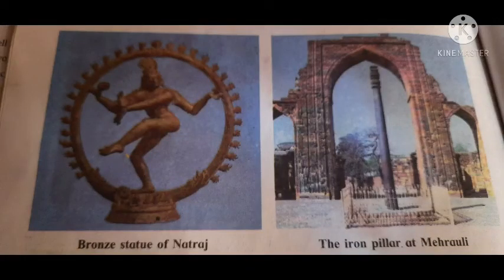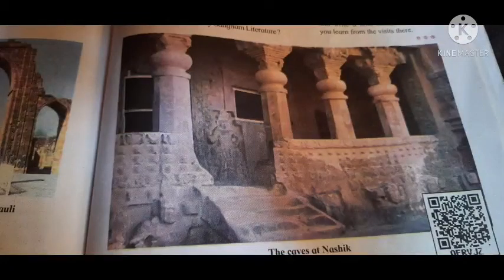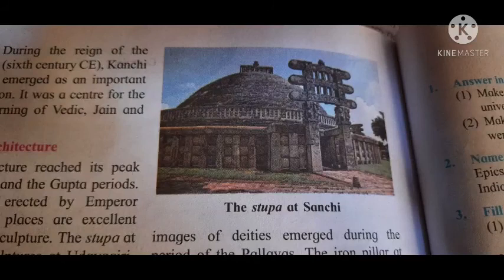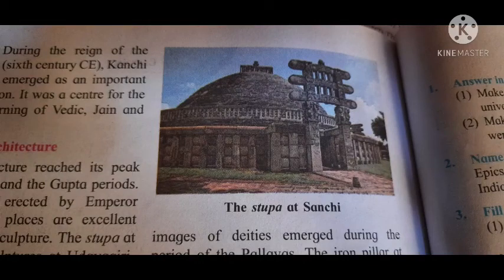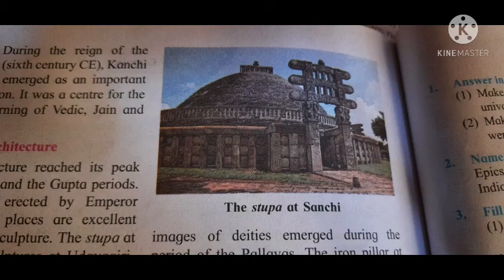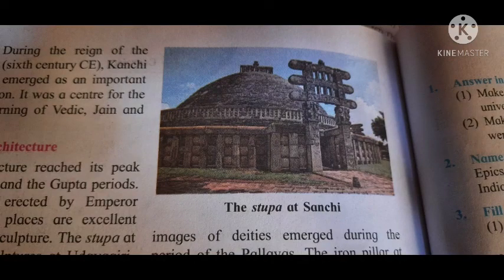Notable examples of ancient Indian art include the bronze statue of Nataraja, the iron pillar at Mehrauli and the caves of Nasik. Sanchi stupa is an outstanding specimen of Buddhist art and architecture — one of the best preserved early stupas in central India. It is surrounded by a railing with four carved gateways facing all four directions. An interesting feature is that Lord Buddha is symbolically represented by footsteps, a wheel and a throne, rather than by his own image.